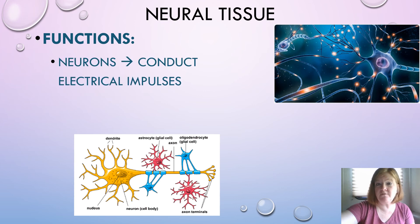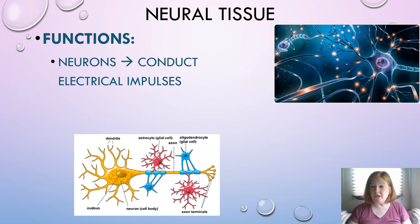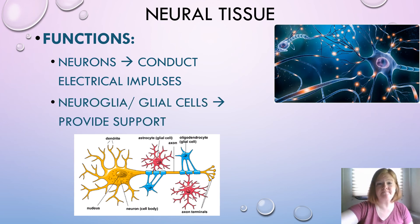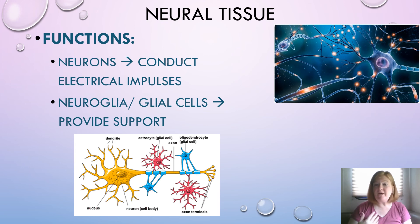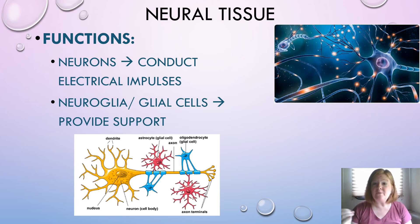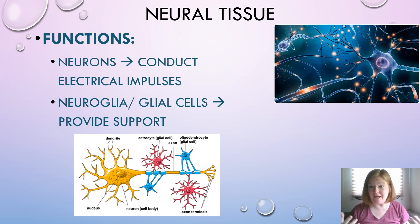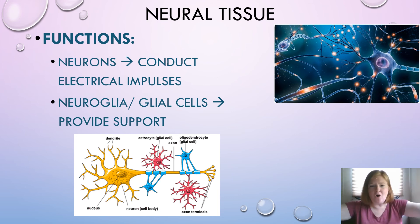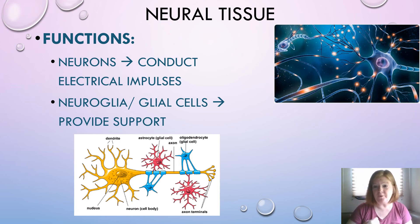The functions of neural tissue: neurons conduct electrical impulses — the fast communication system of the body — while the neuroglia, or glial cells, provide support and protection, produce myelin, and do a whole bunch of other things to support the neurons. It's like the fan club for neurons — neurons go on stage and do their thing, and all of these other cells are supporting them so they're able to do what they need to do.